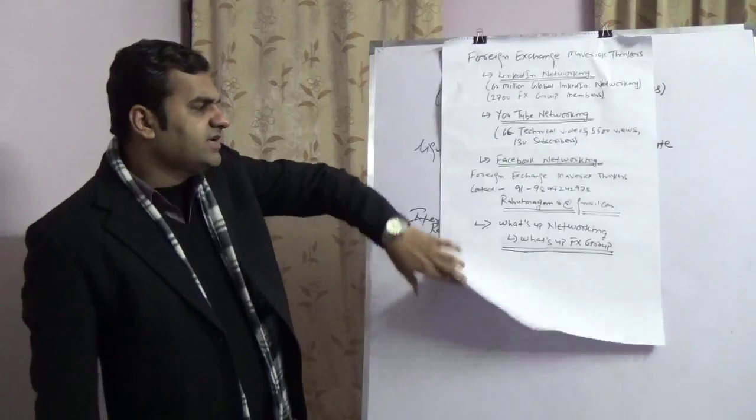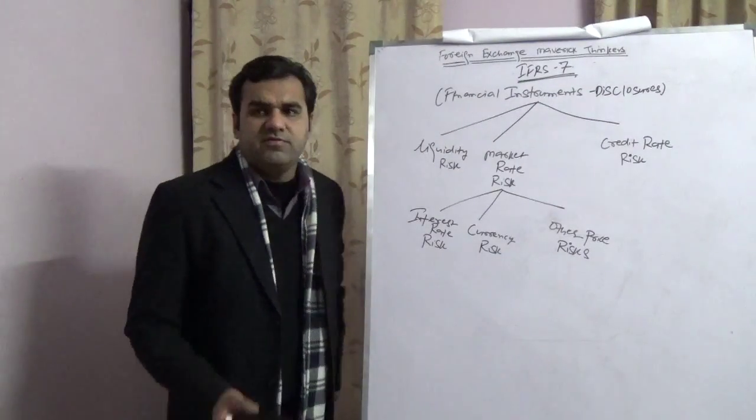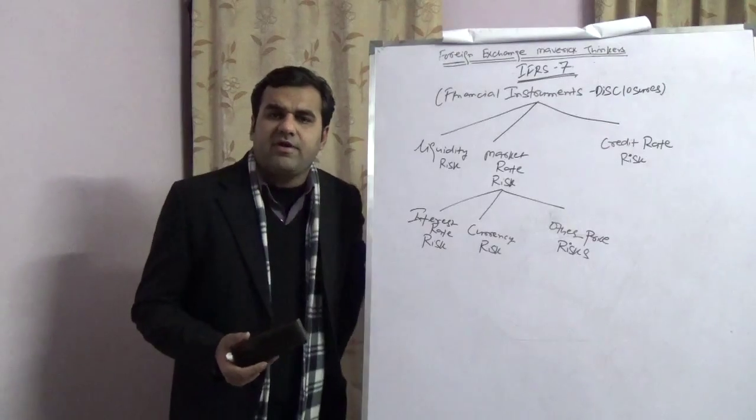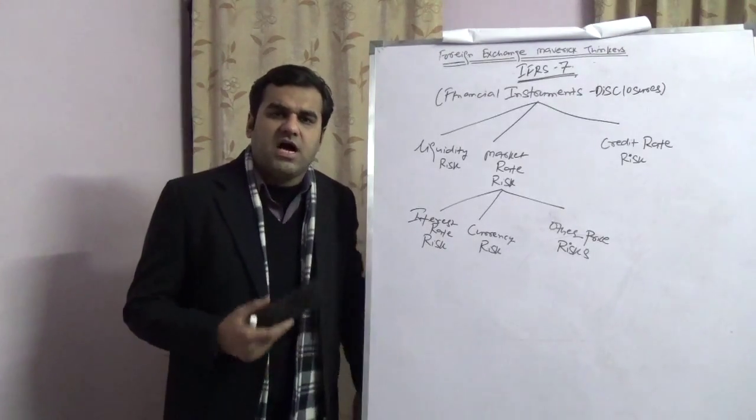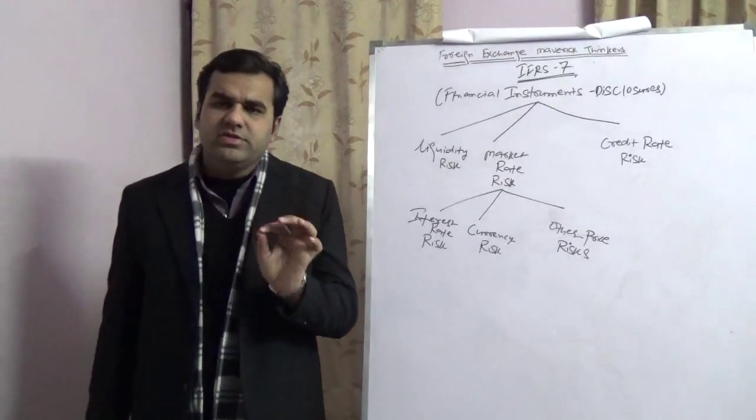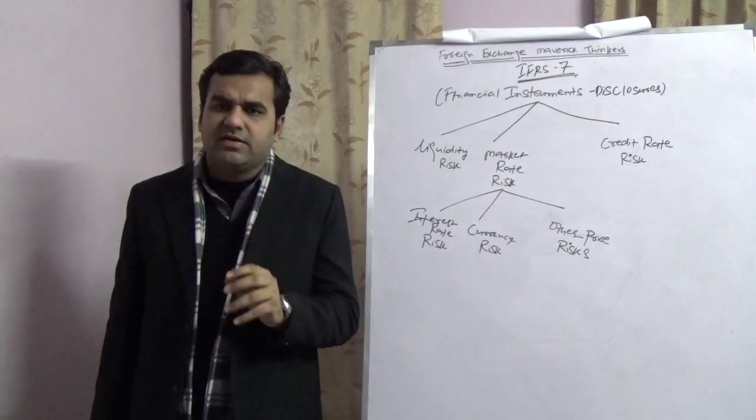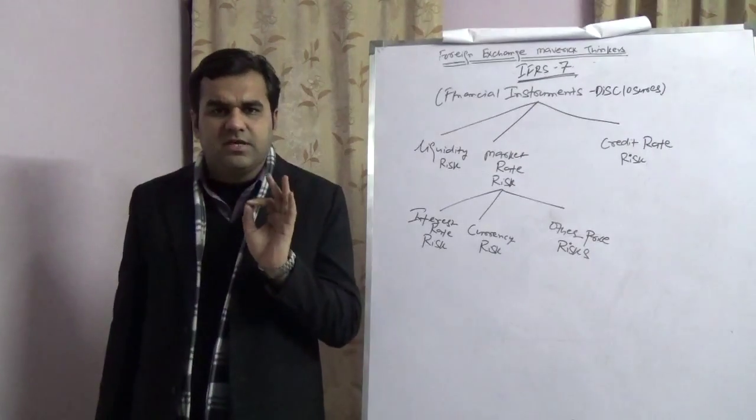Basically, IFRS 7 speaks about the disclosures of the various types of risk a corporate would have in the books. Now, these risks IFRS 7 were divided into three parts. Even US GAAP and IAS, which is Indian Accounting Standard, are not going to speak about that risk. It is only IFRS 7 which speaks about that risk.